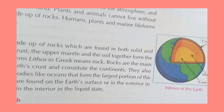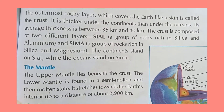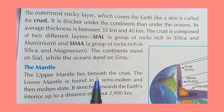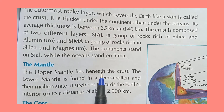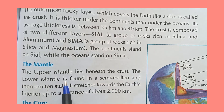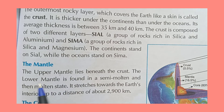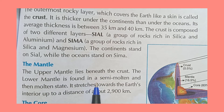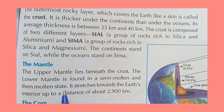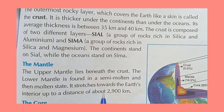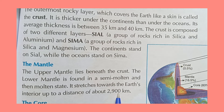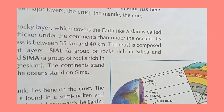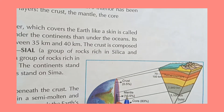Now let us study about the mantle. The upper mantle lies beneath the crust — as you have seen in the picture. The lower mantle is found in a semi-molten and then molten state. It is partially melted but not completely. The mantle stretches towards the earth's interior up to a distance of about 2900 km. This is the second layer shown in the diagram.